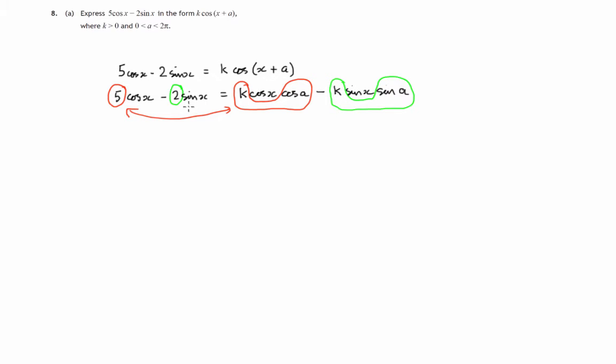Again, these two coefficients, this time of sin x, must be identical. So the number 5 and the number k cos a must be equal. So k cos a must be 5. And the number 2 must be the same as the number k sin a. So there we have simultaneous equations to solve.